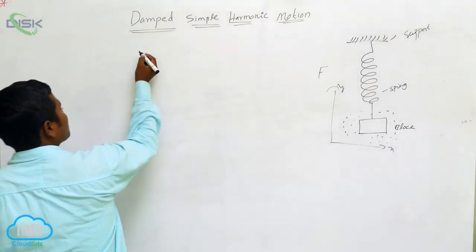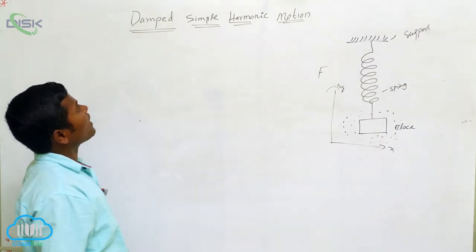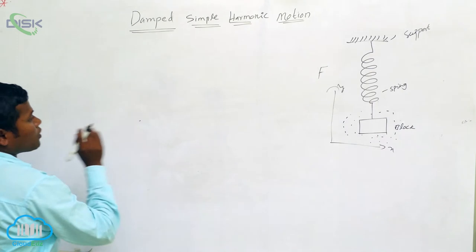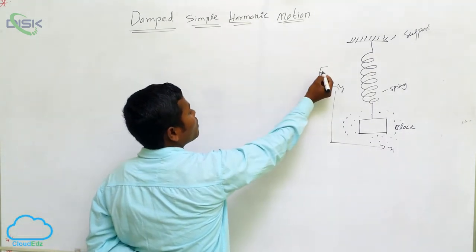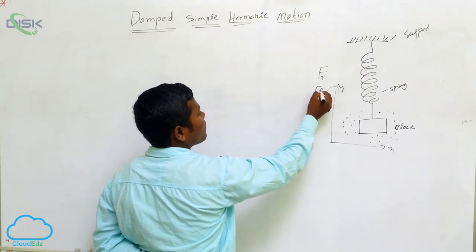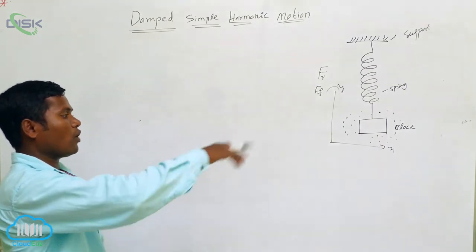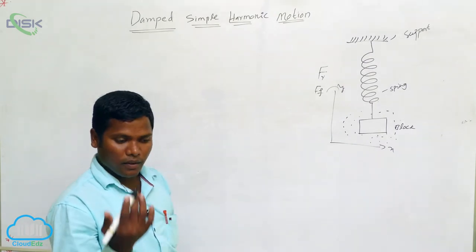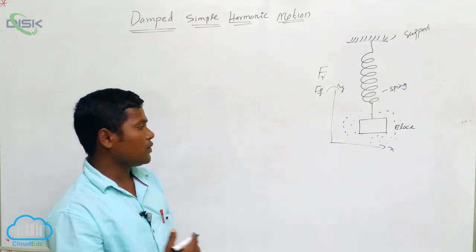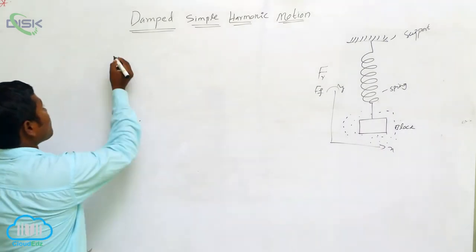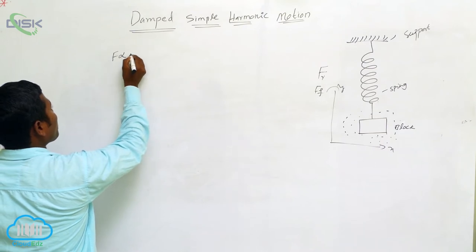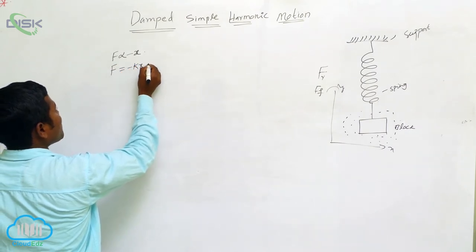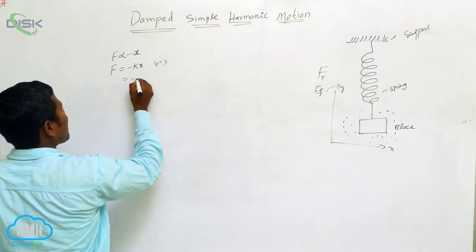Now we are going to derive the damped simple harmonic motion equation. Two forces are acting: restoring force and frictional force. Due to air friction around the pendulum, it eventually stops. The restoring force is proportional to displacement x, so we write F = -μx (equation 1).